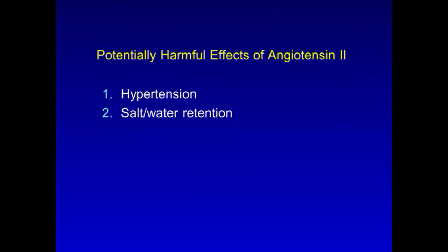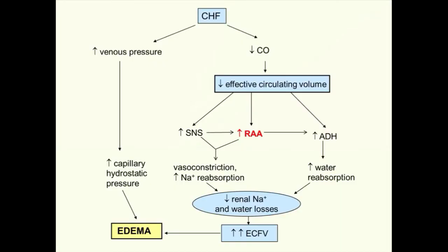Angiotensin II contributes to salt and water retention in states such as congestive heart failure. This happens because the low cardiac output of the failing heart activates baroreceptors and results in increased activity of the renin-angiotensin and sympathetic nervous systems, just like what happens in volume depletion. Except here, the salt and water retention are maladaptive, and instead of helping to correct volume depletion, they cause an increase in extracellular volume and produce edema.